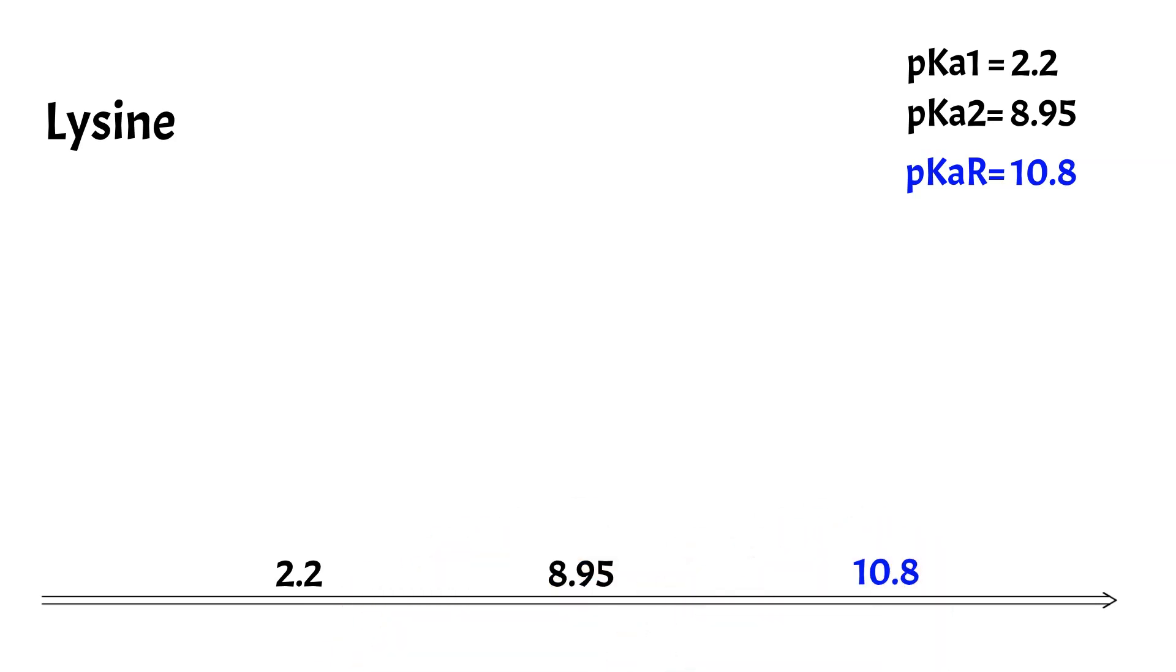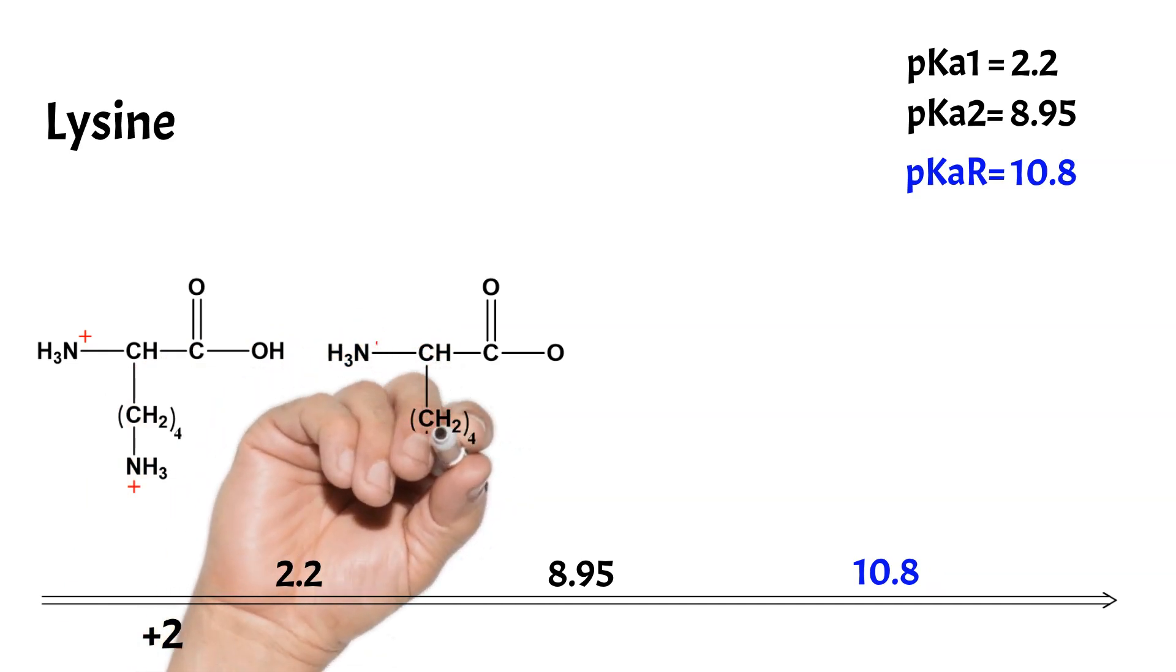Below the pK1 value for the carboxyl group, the net charge is plus two. And when the carboxyl group loses its proton at pK1, the net charge decreases to plus one.